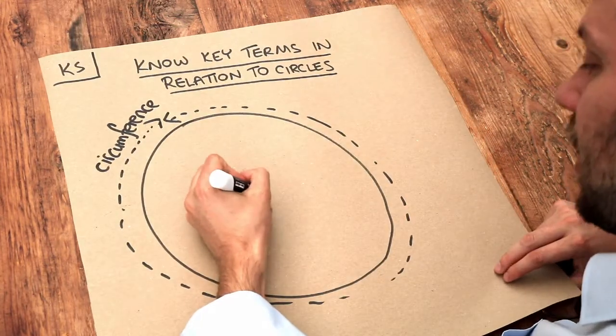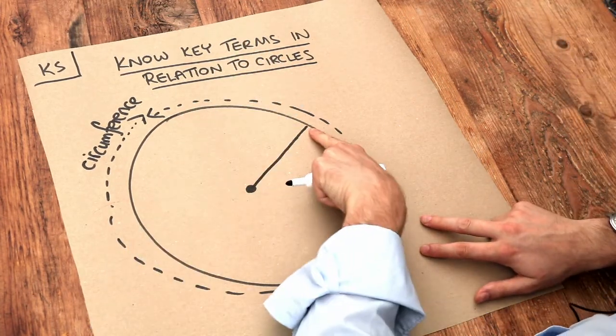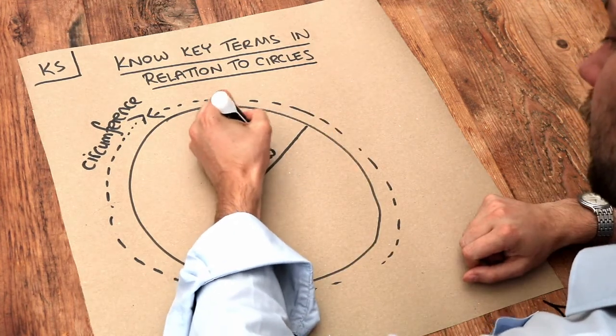Now if we have the center of the circle here and we have a line that connects the center of the circle to the circumference, that is known as the radius of the circle.